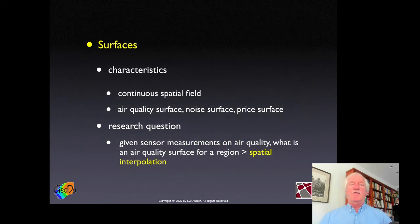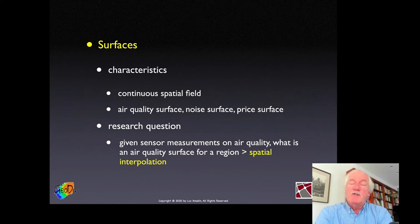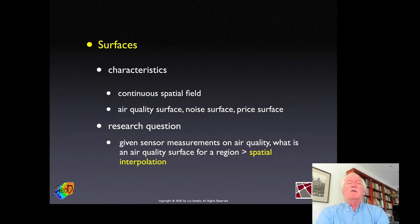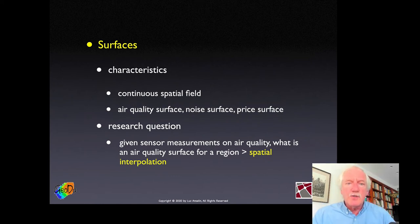The second broad type of spatial data concerns continuous spatial fields or surfaces. Whereas points were discrete events, here we're concerned with surfaces — approximating a phenomenon by a continuous surface like air quality, noise, or sometimes price surfaces for house prices. The research question here is different: we're more interested in interpolation, which is really a form of prediction — predicting values for locations where we do not observe the value.